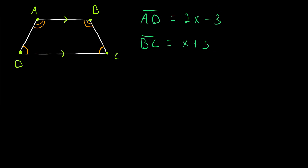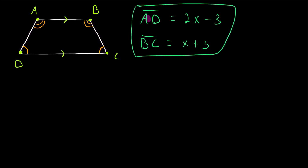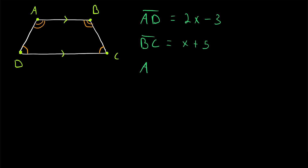Here's a quick example of a problem you might be given with an isosceles trapezoid. Suppose we have this isosceles trapezoid and we know which sides are the bases. Since it's an isosceles trapezoid, the legs AD and BC are congruent. Suppose we're given expressions for the lengths of the legs AD and BC, and we want to find the length of segment AD. We can do that by setting these expressions equal to each other — since the legs are congruent, 2x minus 3 equals x plus 5.